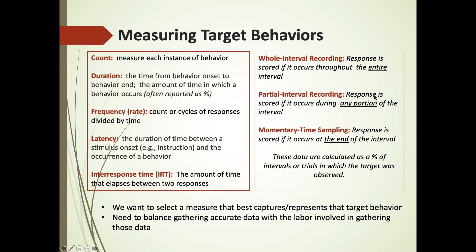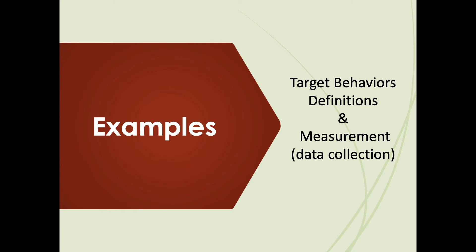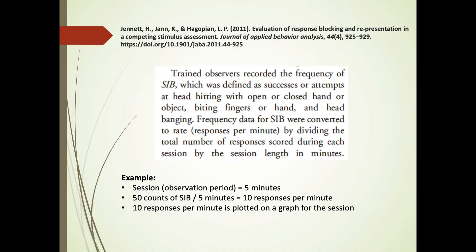We need to select the measure that best captures the target behavior. For example, count is not particularly sensitive for out-of-seat behavior if the child only gets out of their seat twice but each time walks around for five minutes — duration is the more sensitive measure. We also need to balance accuracy with the labor involved in gathering data. If a teacher has 10 other students and must record duration of out-of-seat behavior, it's very labor intensive, and accuracy may suffer, so a discontinuous procedure may be more appropriate despite introducing estimation error.